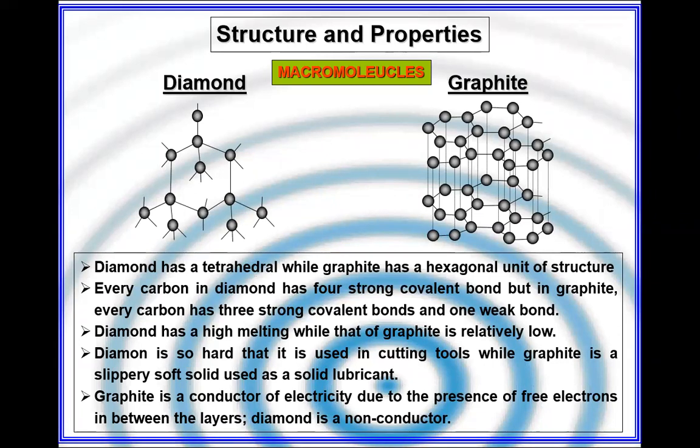Another example of macromolecule is silicon dioxide. Silicon dioxide structure is also tetrahedral in shape and has high melting and high boiling points. But silicon dioxide does not conduct electricity because all the outer electrons of oxygen and silicon atoms are used for bonding. That means there are no free electrons to move through the structure to conduct electricity.